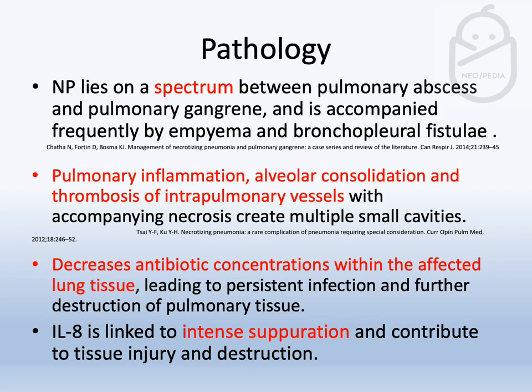Necrotizing pneumonia is basically a spectrum between pulmonary abscess and pulmonary gangrene. Pulmonary inflammation and alveolar consolidation are the main pathology, but thrombosis of intrapulmonary vessels is also important. This thrombosis can lead to decreased antibiotic concentration within the affected lung tissue, consequently leading to persistent infection and further destruction of pulmonary tissue. Interleukin-8 is also thought to be linked to intense inflammation and can contribute to tissue injury and destruction.